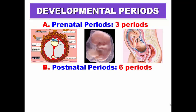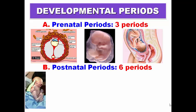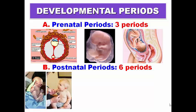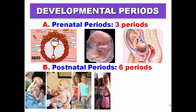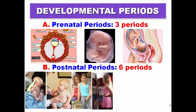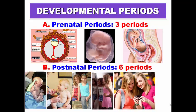Postnatal periods start with the newborn or neonatal period, then infancy, then childhood, then puberty, then adolescence — three to four years after puberty — and then adulthood.